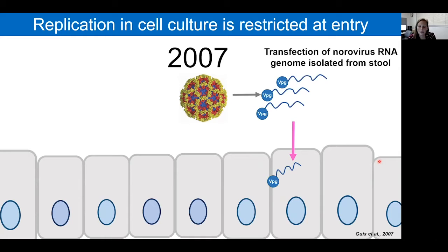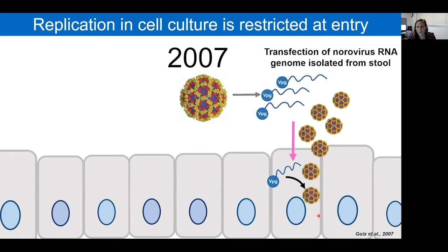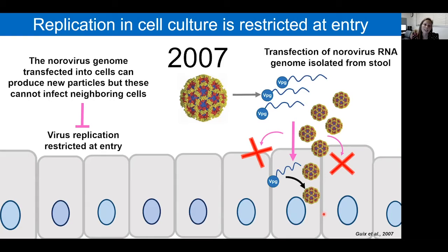Our lab showed that you could take the isolated norovirus genome—an RNA genome—from stool and transfect it into continuous laboratory cell lines, which would produce new viral particles. However, those viral particles cannot infect their neighbors. This shows us that the restriction for infection in continuous cell lines is a restriction at entry stages.